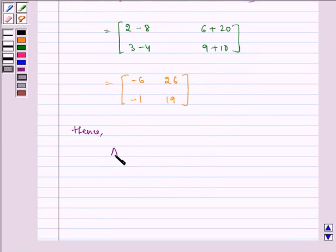Hence, AB is equal to minus 6, 26, minus 1, 19, which is our required answer.